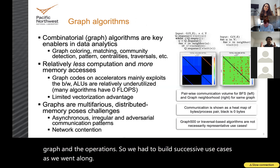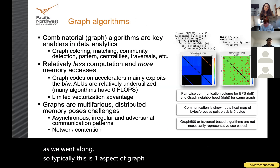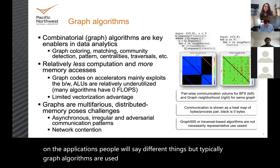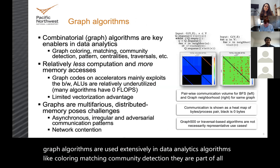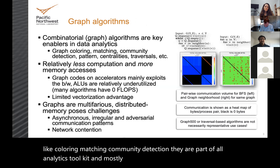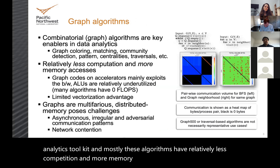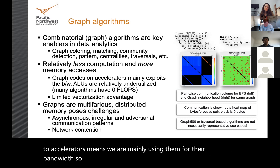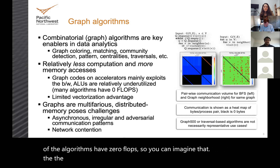Typically, graph algorithms are used extensively in data analytics. Algorithms like coloring, matching, and community detection are part of all analytics toolsets. Mostly these algorithms have relatively less computation and more memory accesses. Nowadays there's a need to use accelerators, but porting graph applications to accelerators means we are mainly using them for their bandwidth, since the ALUs are not utilized that much — many of the algorithms have zero flops.